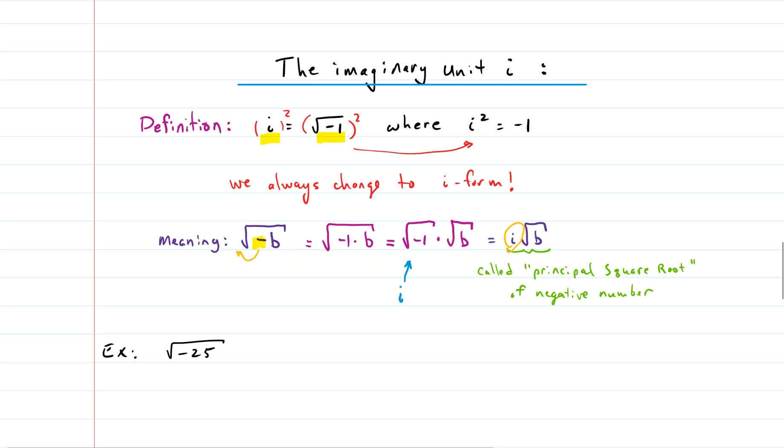So that's what we mean when we say change to i form. Most often students will go from this first step all the way to last step in one shot. They often do the intermediate two steps in their head and that's totally fine. I wrote it out here just so you could see it.